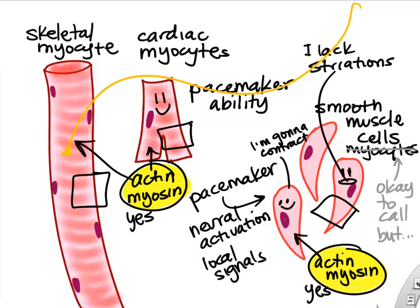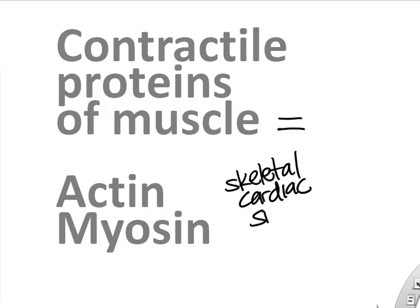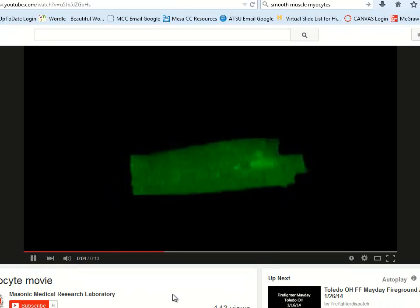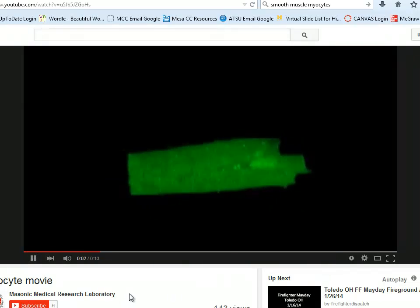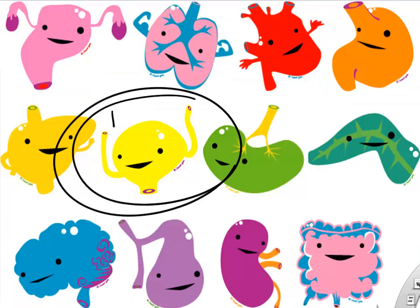Actin and myosin are the contractile proteins of all muscle cells — something you need to remember. Skeletal and cardiac muscle show striations visibly. This is actually a cardiac muscle cell showing what it looks like when it contracts — they'll contract by themselves in culture and don't need any signals from the brain.